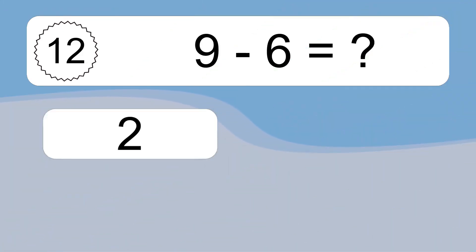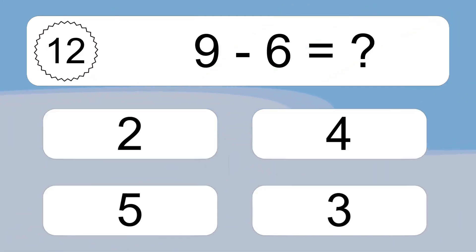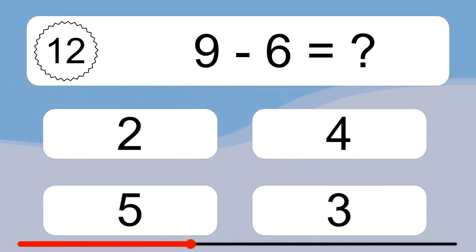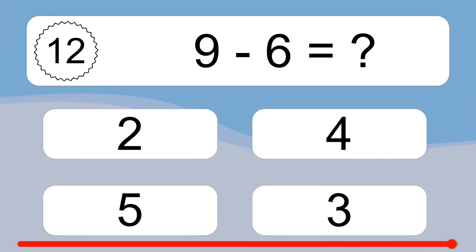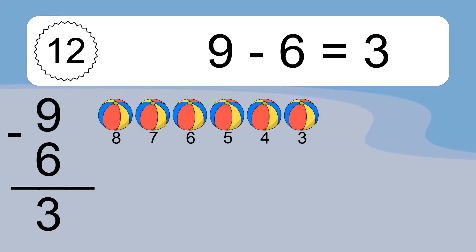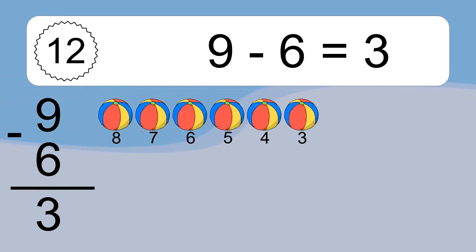9 minus 6 equals what? 9 minus 6 equals 3. Let's count it: 8, 7, 6, 5, 4, 3.